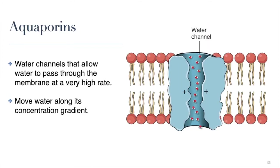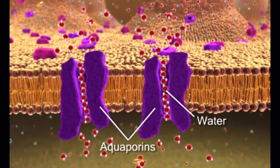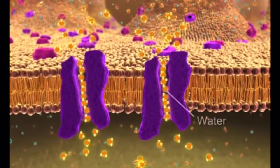Aquaporins are another type of channel. These are channel proteins that allow water to pass through the membrane at a very high rate along its concentration gradient. Now, most cell membranes are actually permeable to water, which means that water can move through the phospholipid bilayer and doesn't need a channel protein. However, there are times in certain tissues when water needs to move in or out of the cell faster and is helped along by these specialized protein channels. For example, aquaporins can be found in the kidneys, where they help with water reabsorption. Whenever we are dehydrated, extra aquaporins are sent to special cells within the kidneys in order to help reabsorb extra water.